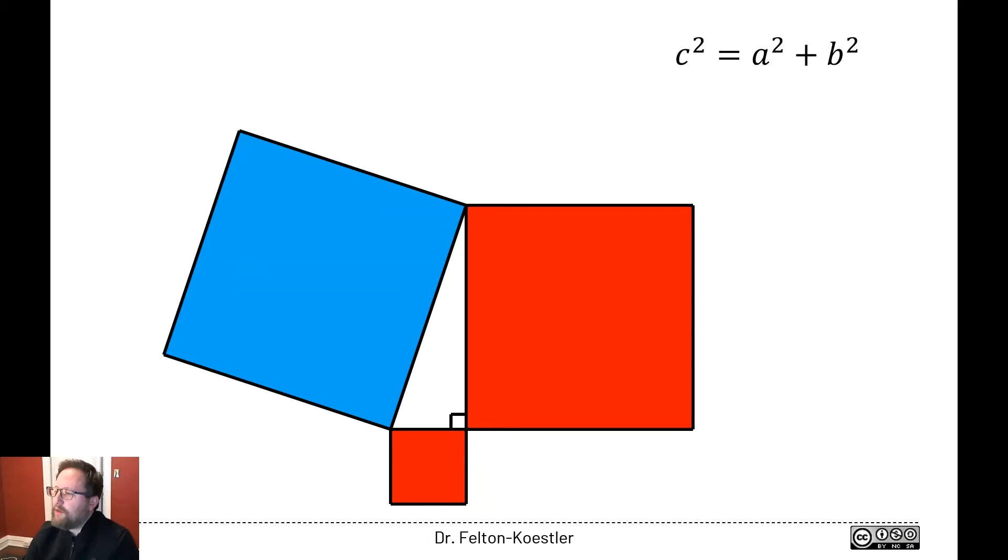So I can build squares off of each side if I want. These two red squares off the legs and this blue square off the hypotenuse. And what this theorem is saying is that the area of these two red squares, which are a squared and b squared together, is the same as the area of this blue square, which is c squared. That's what the theorem is really saying. These two smaller squares have the same total area as this one larger square off the hypotenuse.